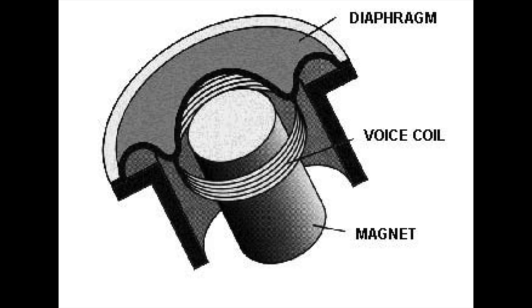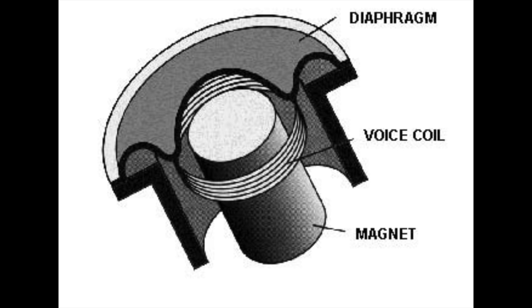How this works is when sound waves hit the diaphragm, that actually vibrates the voice coil, and with that movement of the coil within the magnetic field it converts the audio signals into electrical signals that can be interpreted by your audio interface or by your amplifier.